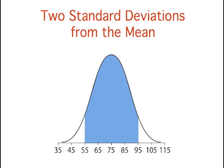This figure shows a normal distribution with a mean of 75 and a standard deviation of 10. The shaded area extends 1.96 standard deviations from the mean in each direction. The shaded area contains 95% of the distribution and extends from 55.4 to 94.6.